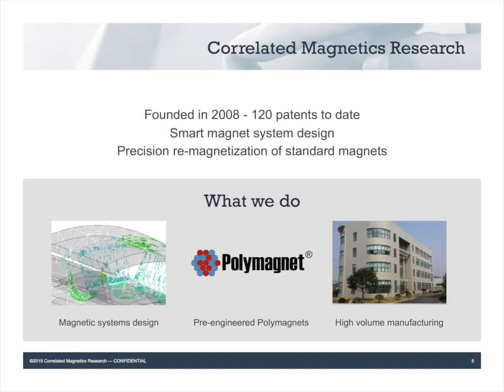Correlated Magnetics Research was founded in 2008. We've had significant technology developments in that time, and the technology continues to grow. Perhaps more significantly to you is the growth in our ability to design, integrate, and deliver solutions for products like yours. When we say smart magnet system design, we mean a core set of scalable solutions that allow us to respond to a variety of product needs, and we have a talented team of engineers to help you bring your product designs to market. Our factory is shipping magnets in volume to make sure the solutions you develop can be delivered to your customers.